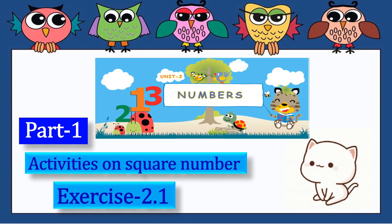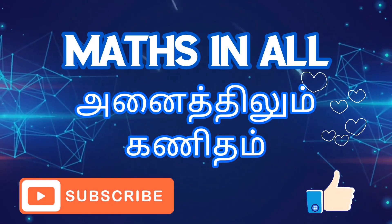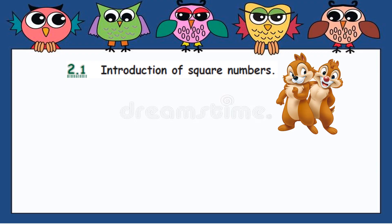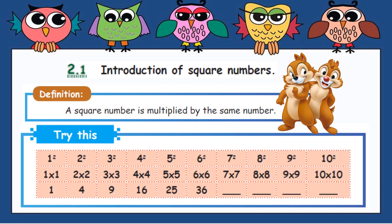Introduction of square numbers. See here, definition: A square number is multiplied by the same number. This we have already learned from the tables, isn't it? Okay, just have a recap now.